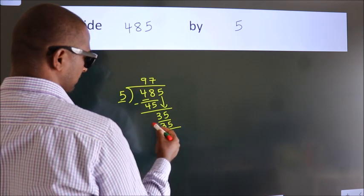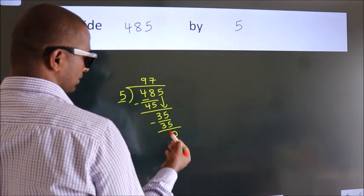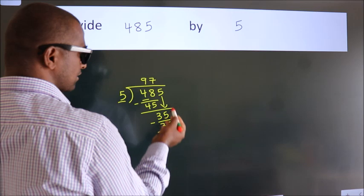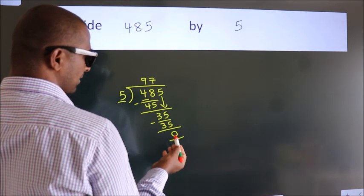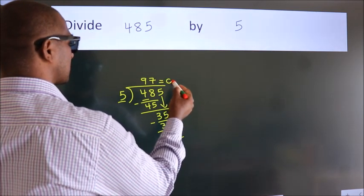Now we subtract. We get 0. After this, no more numbers to bring it down. And we got remainder 0. So this is our quotient.